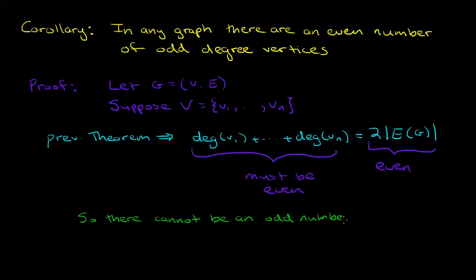So there cannot be an odd number of odd degrees. The reason why is because if there was an odd number of odd degrees, then this sum would come out odd, and that would be a contradiction. So then we know that in any graph, the number of odd degree vertices must be an even number.